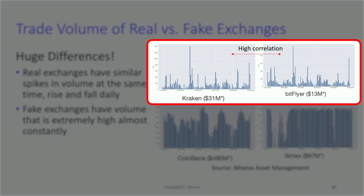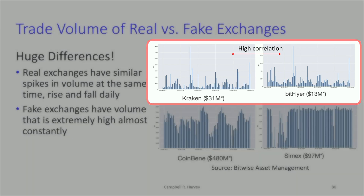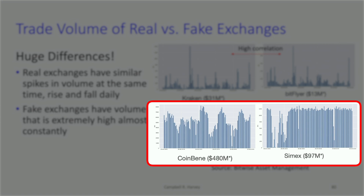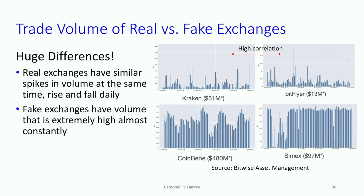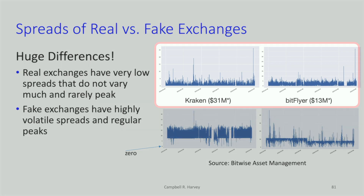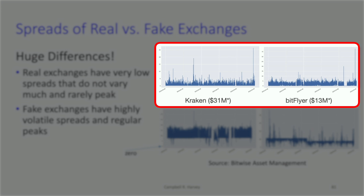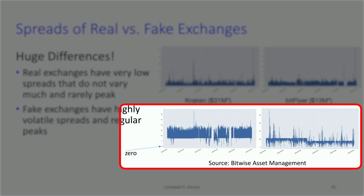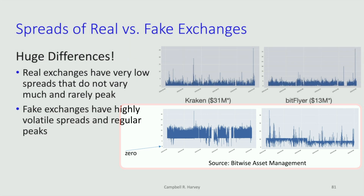Looking at volume over an extended period of time, the top two legitimate exchanges are quite correlated with each other, which makes sense. The bottom two suspicious exchanges show essentially no correlation with Kraken, Coinbase, or any real exchange. And then looking at spreads: the top exchanges show reasonable spreads that vary through time, while the bottom suspicious exchanges show volatile, extremely high spreads that make no economic sense. The forensics here are not difficult — you don't need to hire a forensics firm to spot these problems.